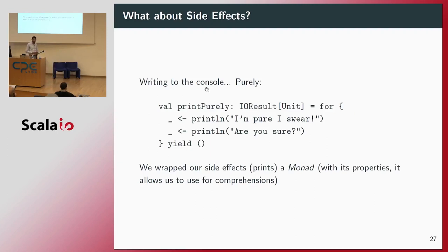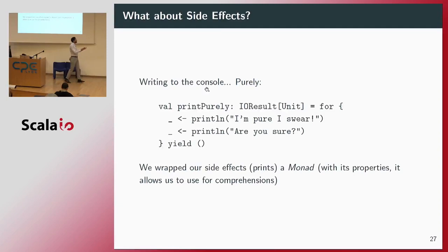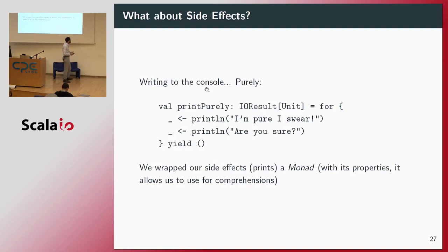What about side effects? We know that printing and writing to a file are side effects. If we want to work with pure functions while also working with side effects, we can wrap them in an IO monad, loop through it with a for comprehension, and then yield results. We wrap our side effects — the prints — with the monad, and with the properties of the monad this allows us to use for comprehensions.